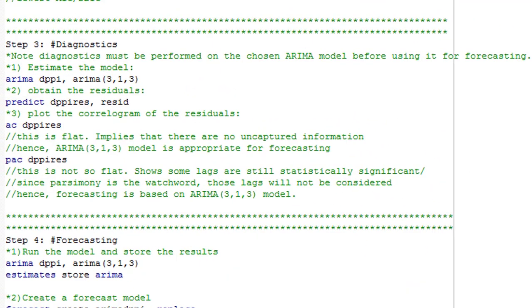So here under diagnostics, what do you need to do? Let's estimate the model again, then predict the residual, that is obtain the residuals, because we need to plot the correlogram of the residuals to see whether it's flat or not. So the first thing we have to do is to rerun the model, which is this. I highlight this, execute.